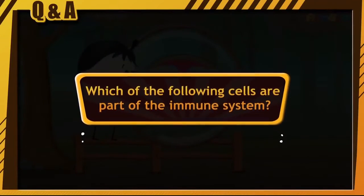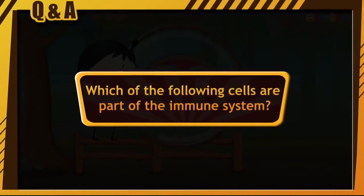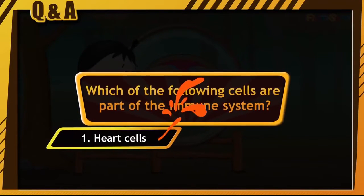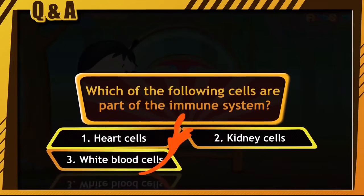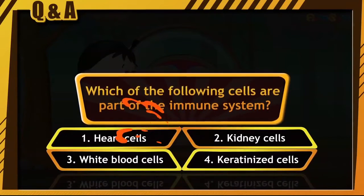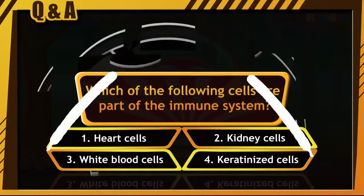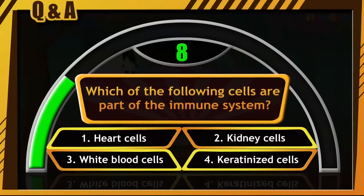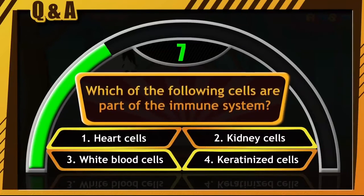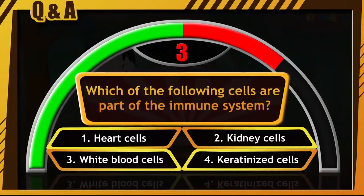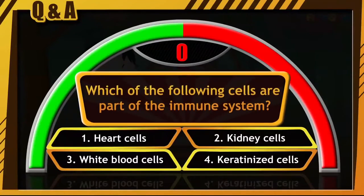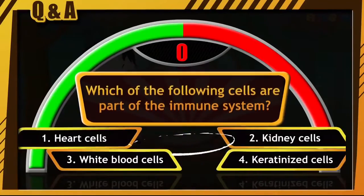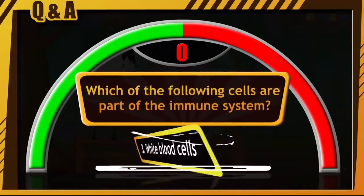Which of the following cells are part of the immune system? Heart cells, kidney cells, white blood cells, or keratinized cells. All the best — your time starts now. Write your answer in the comments section. The answer is option number 3, that is white blood cells.